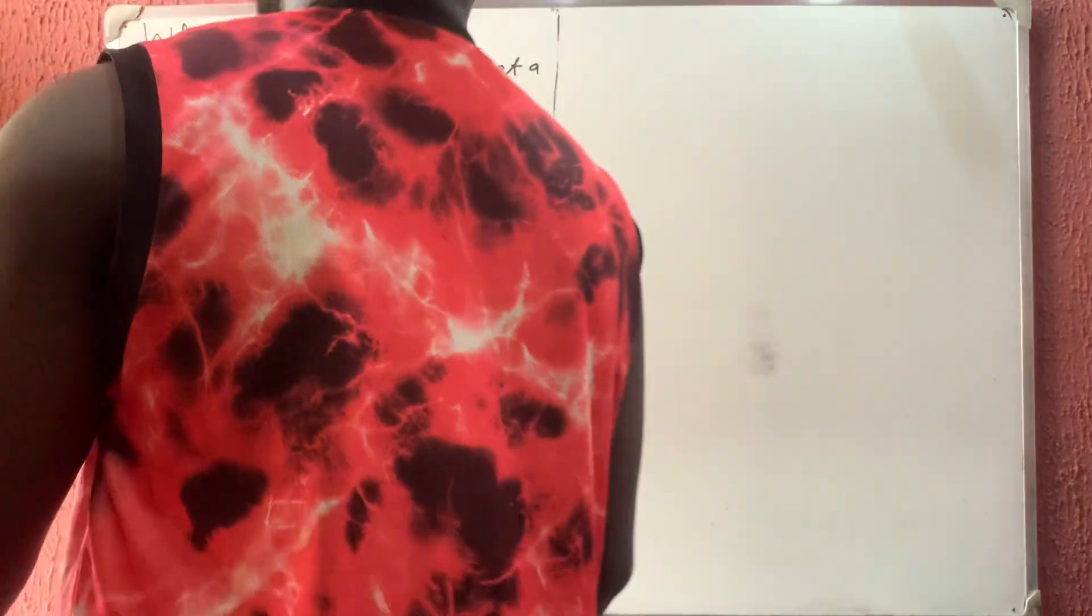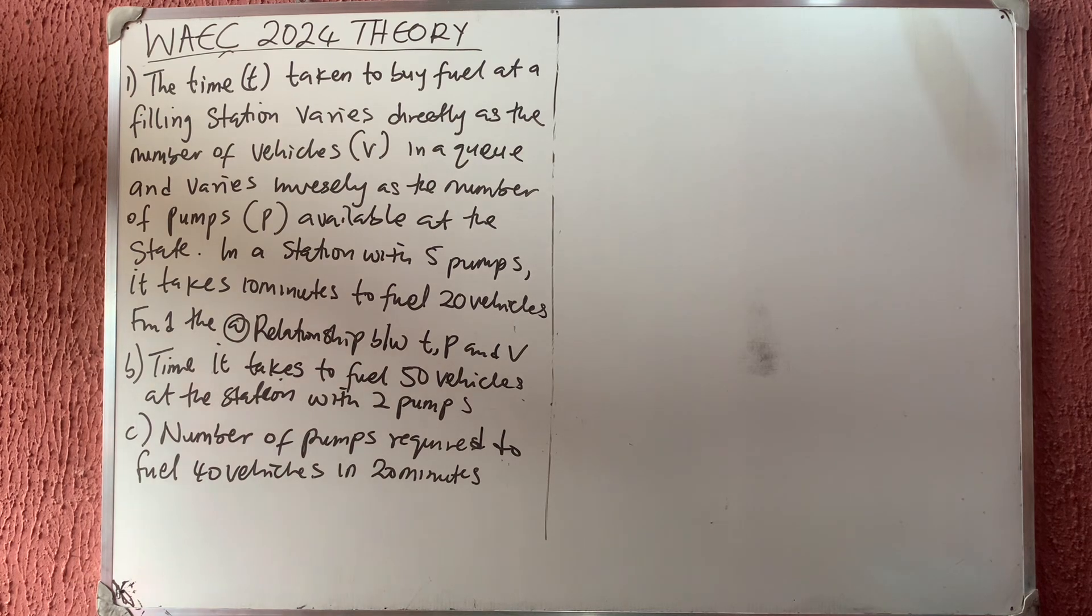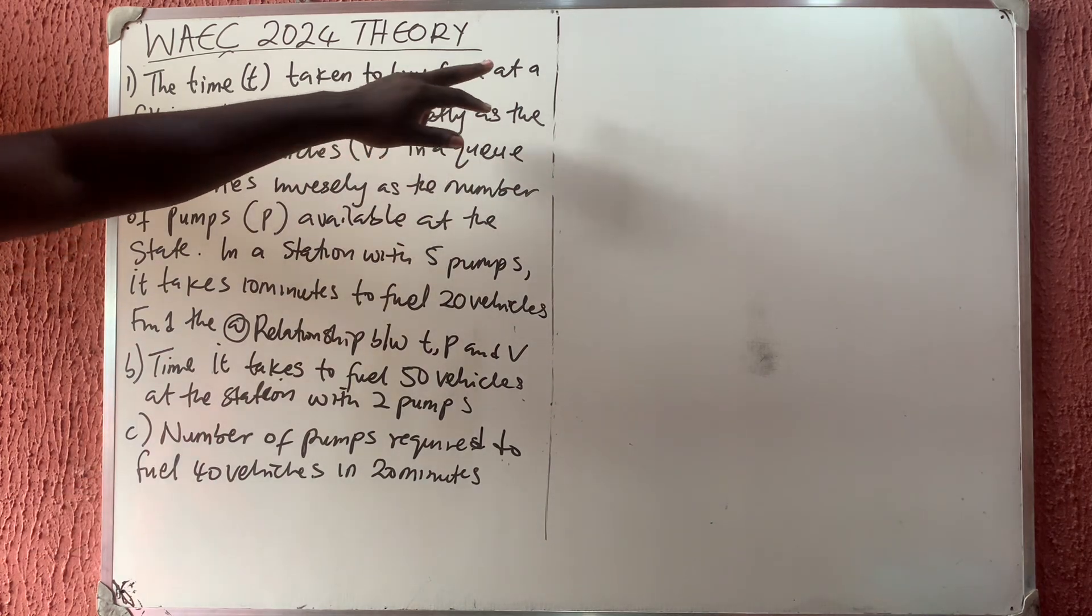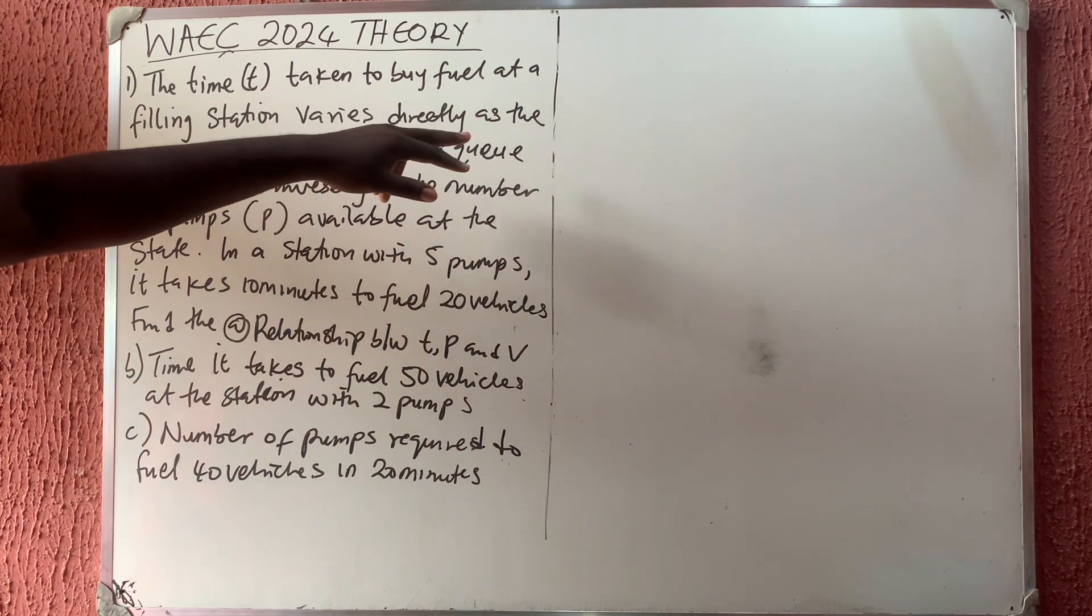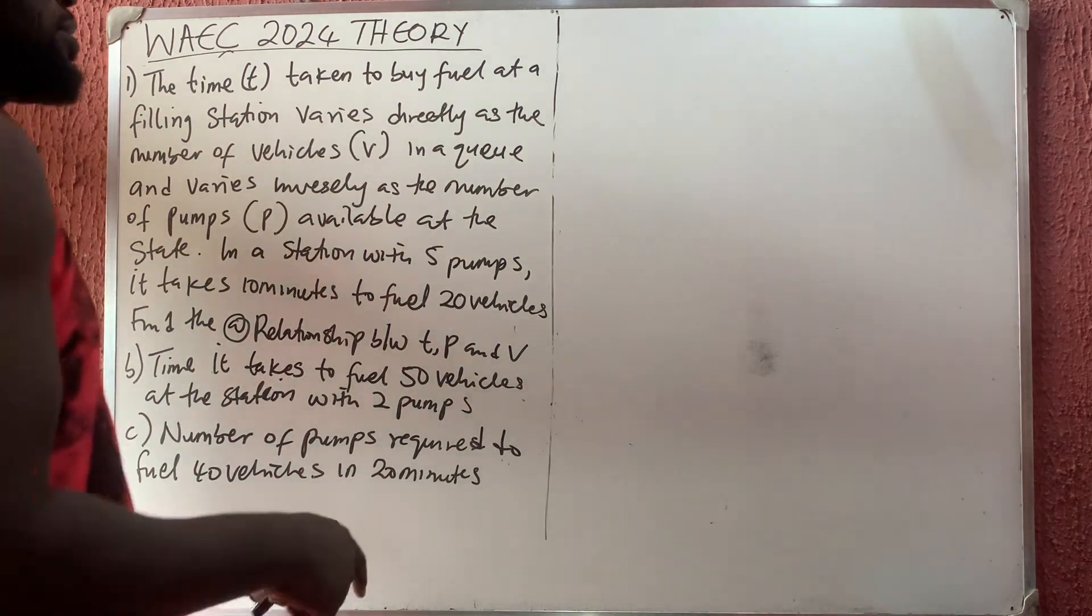Hello viewers, welcome back to my channel. In this video we are solving a WAEC math theory question. This is the first question and it says the time taken to buy fuel at a filling station varies directly as the number of vehicles v. Now let's start from the solution.